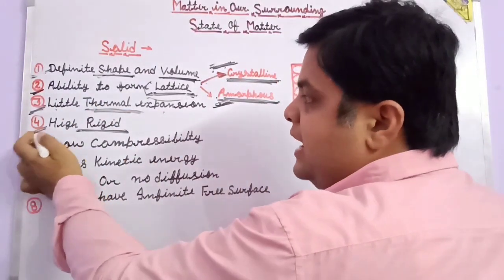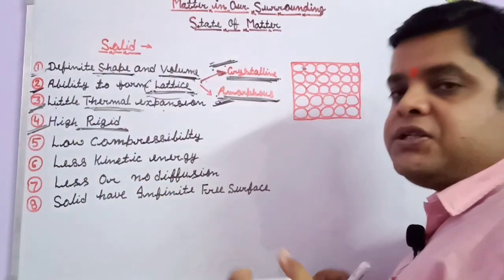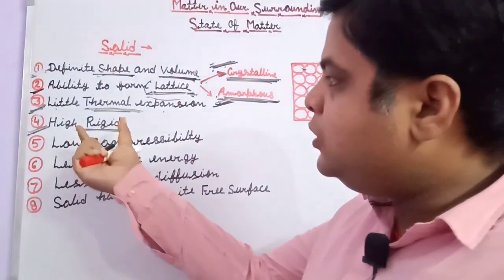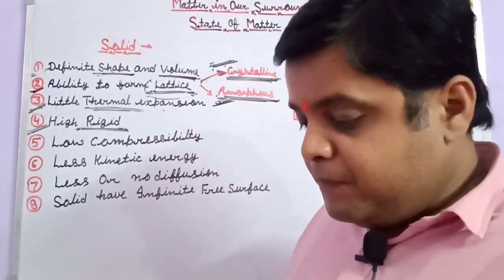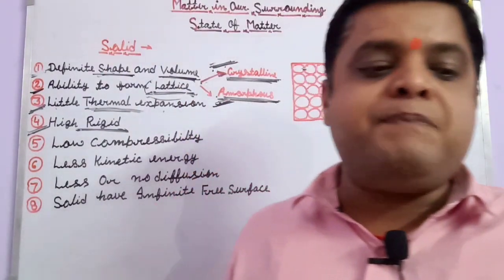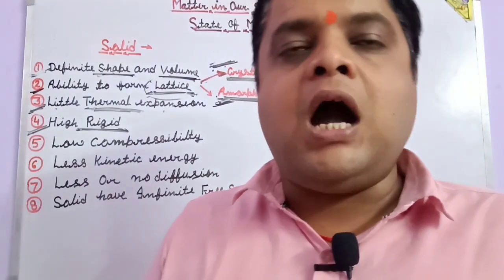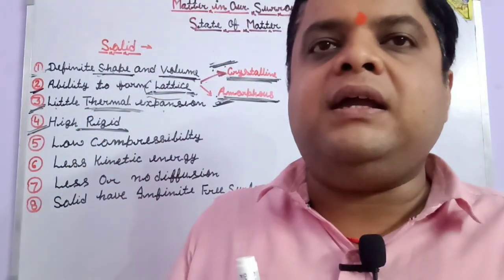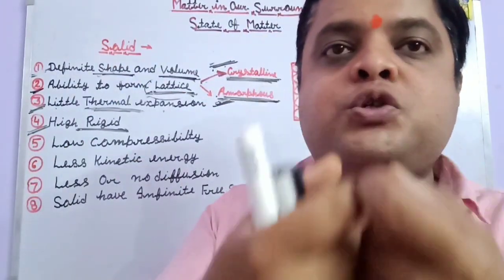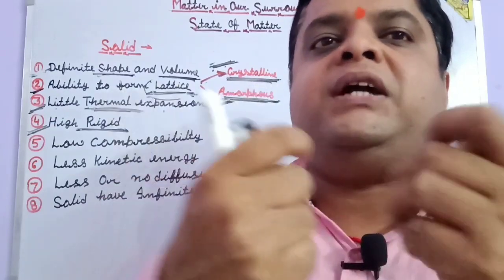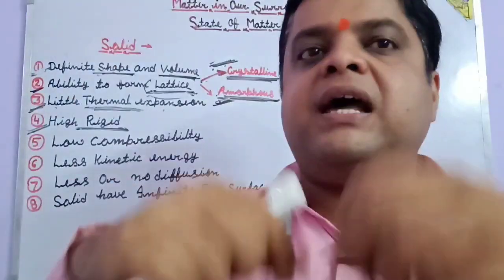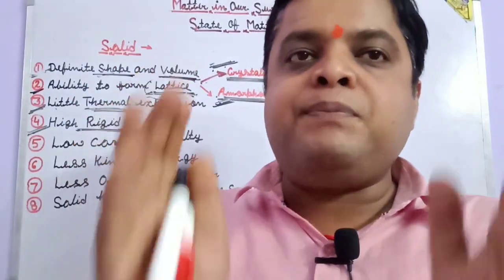Fourth point about solids: they are very hard. Solids can maintain a very definite shape. Another condition is that solids can show elastic properties. For example, a rubber band — when an external force is applied, it expands. It shows elastic property: when force is applied, the shape changes, but when force is removed, it returns to its previous condition.